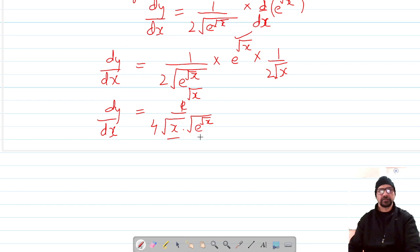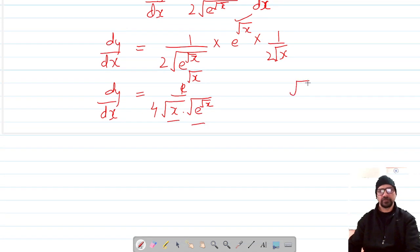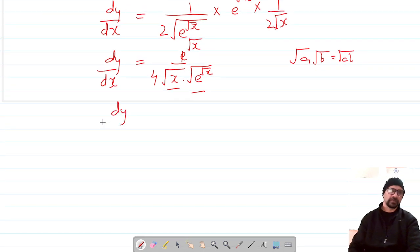Now this is root x root x, so we know that root a into root b is root ab. So let me put it like: it's e raised power root x upon 4, and it's under root x into root e raised power root x.